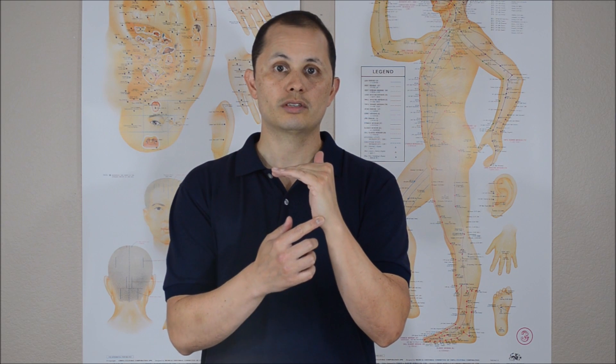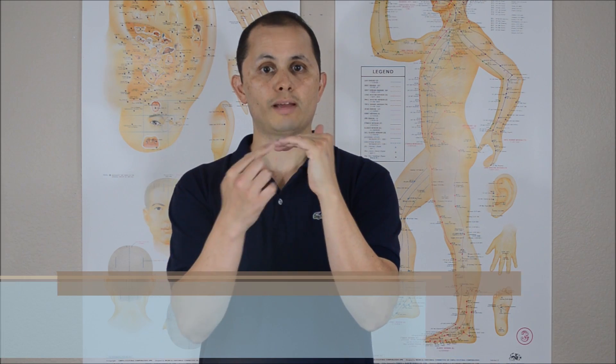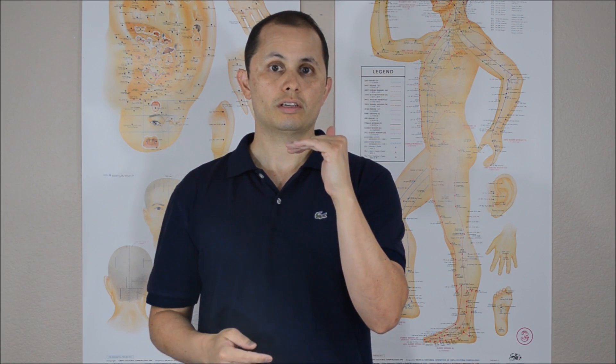You also have another function of flexing the MCP joints, the knuckles, and extending the fingers. So they have a similar function as the lumbricals. So this is a lumbrical grip. It's easy to remember because when you put your hand in this position, it's an L shape. L for lumbricals. So the interossei and lumbricals have similar functions there.